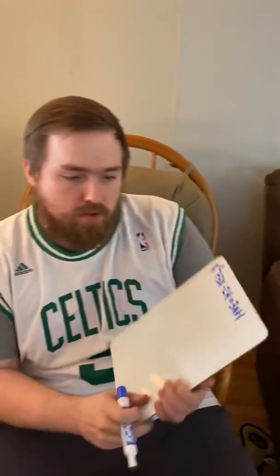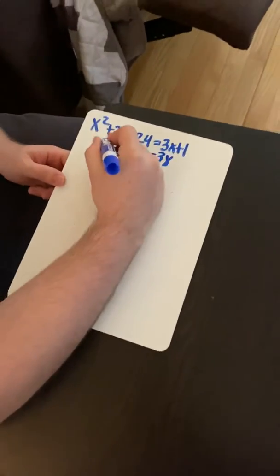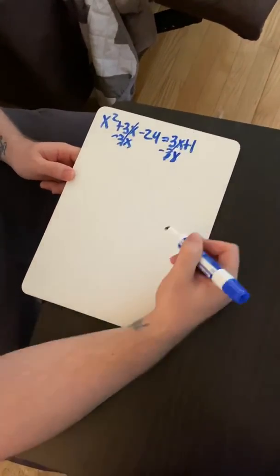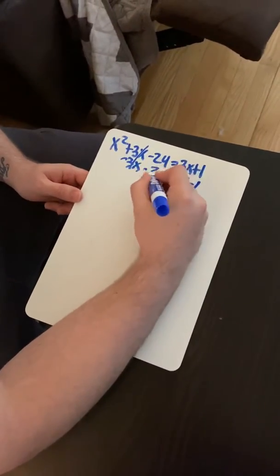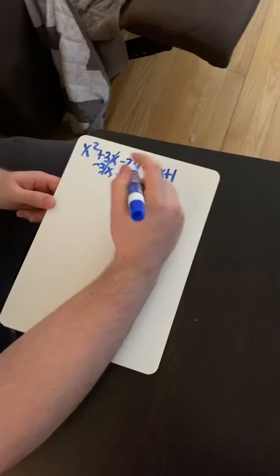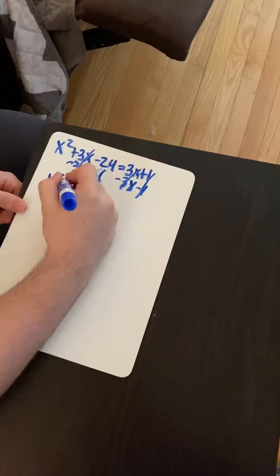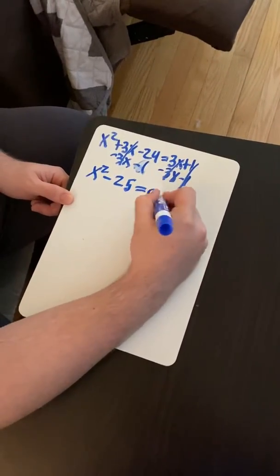So I'm going to go ahead and do that. As I subtract 3x, subtract 3x, the 3x's are going to cancel out. So if I subtract 1 and subtract 1, I end up with x squared minus 25 equals 0.